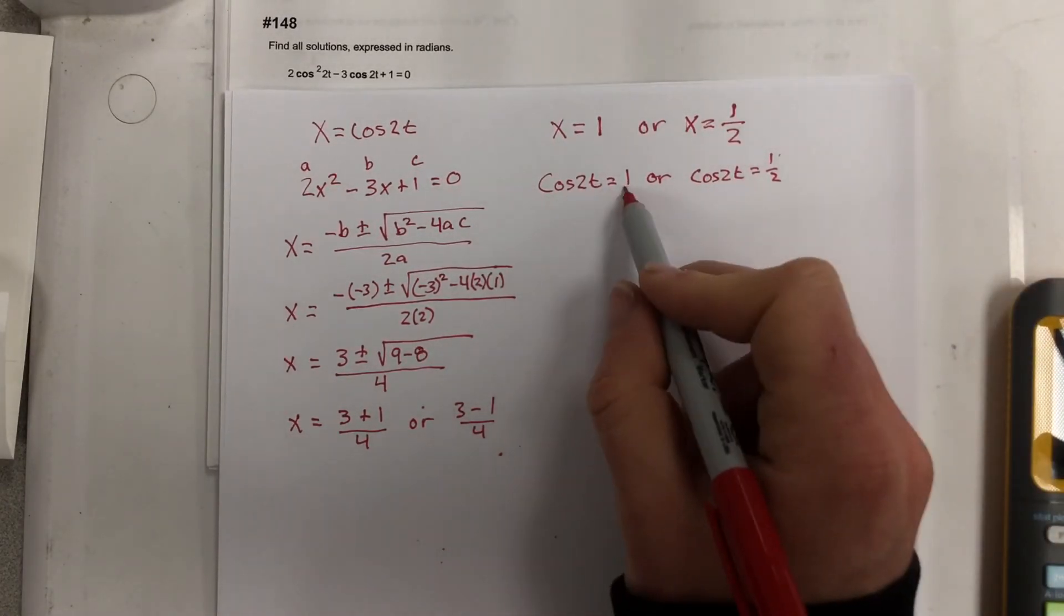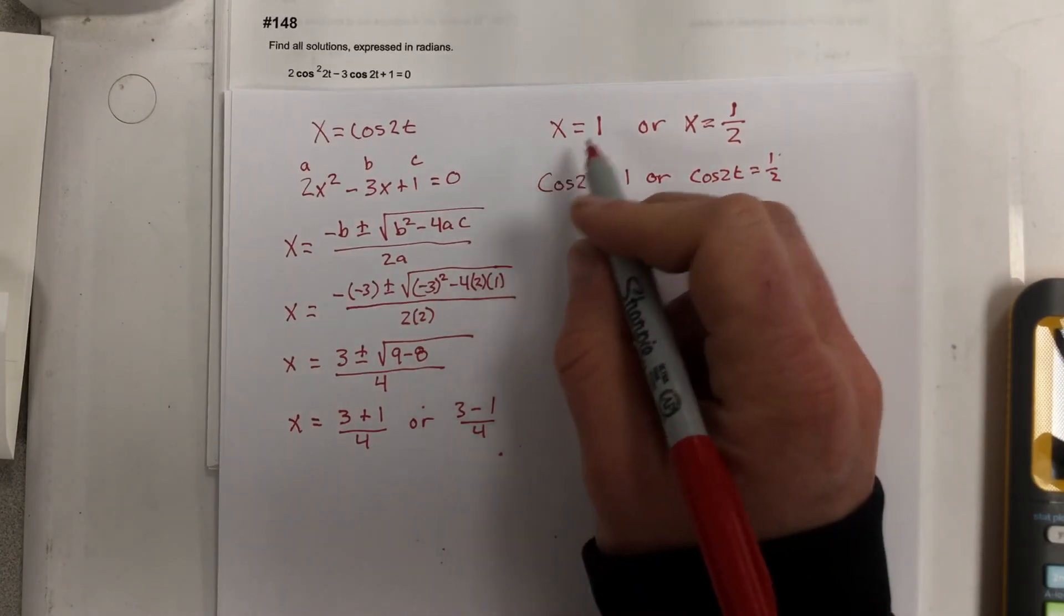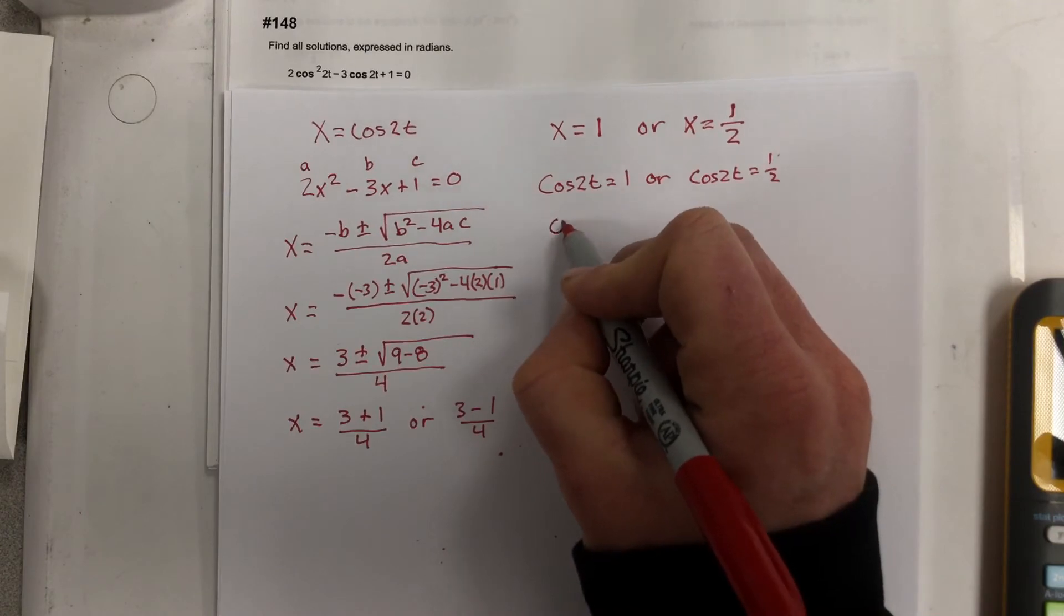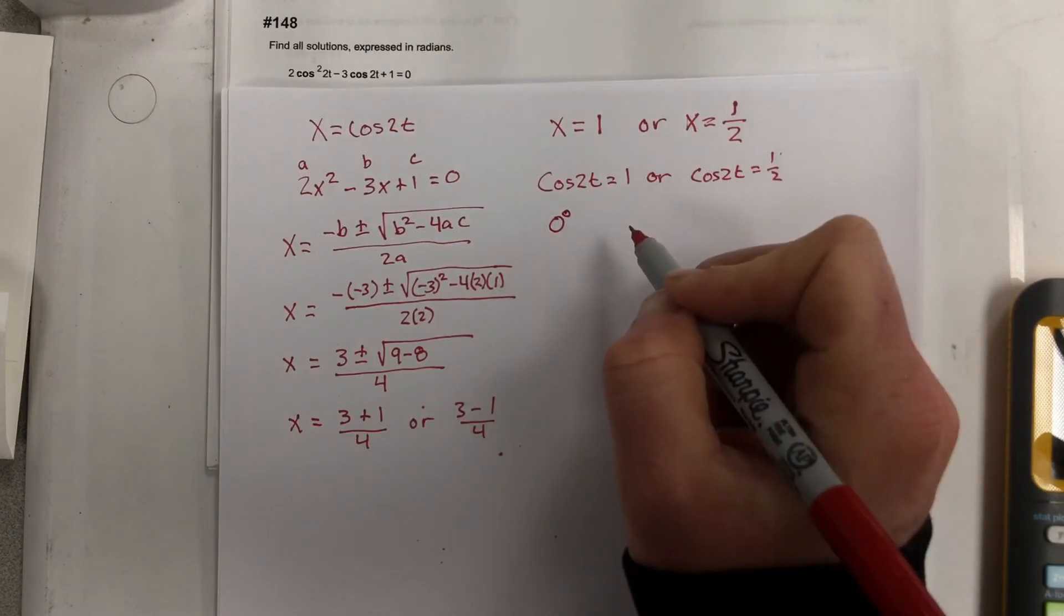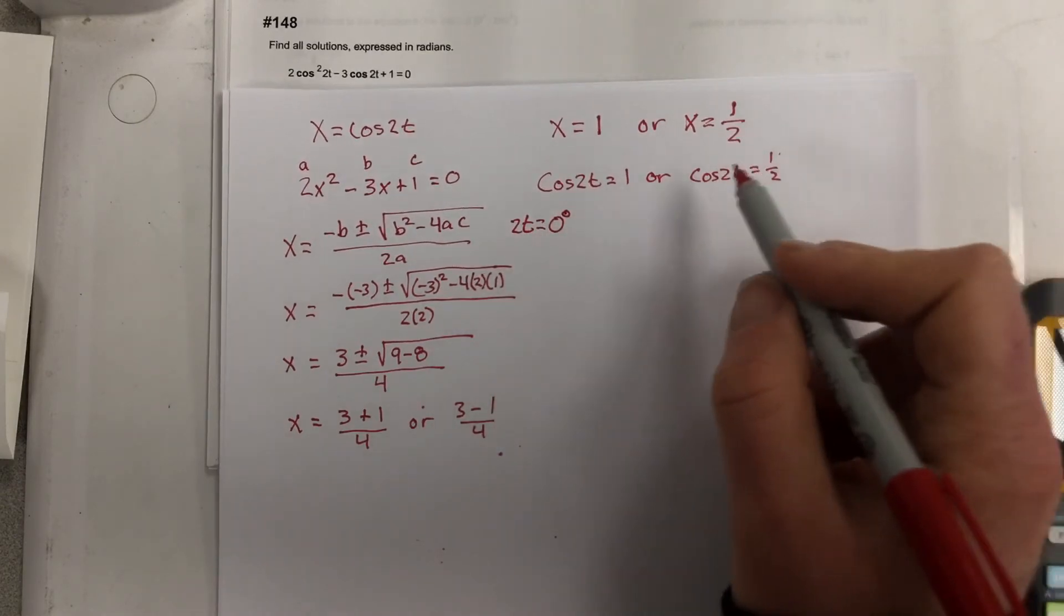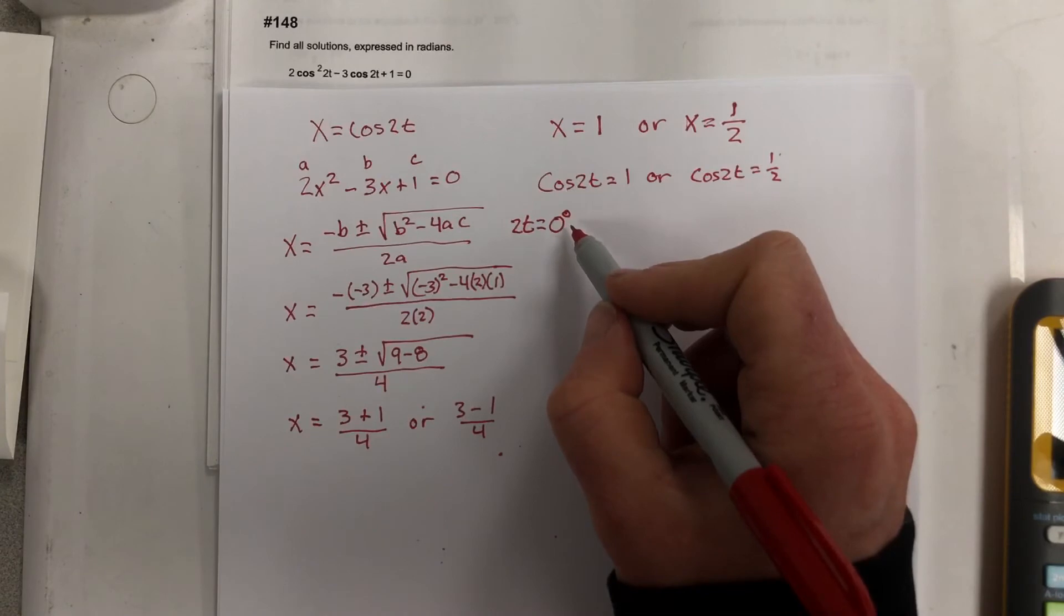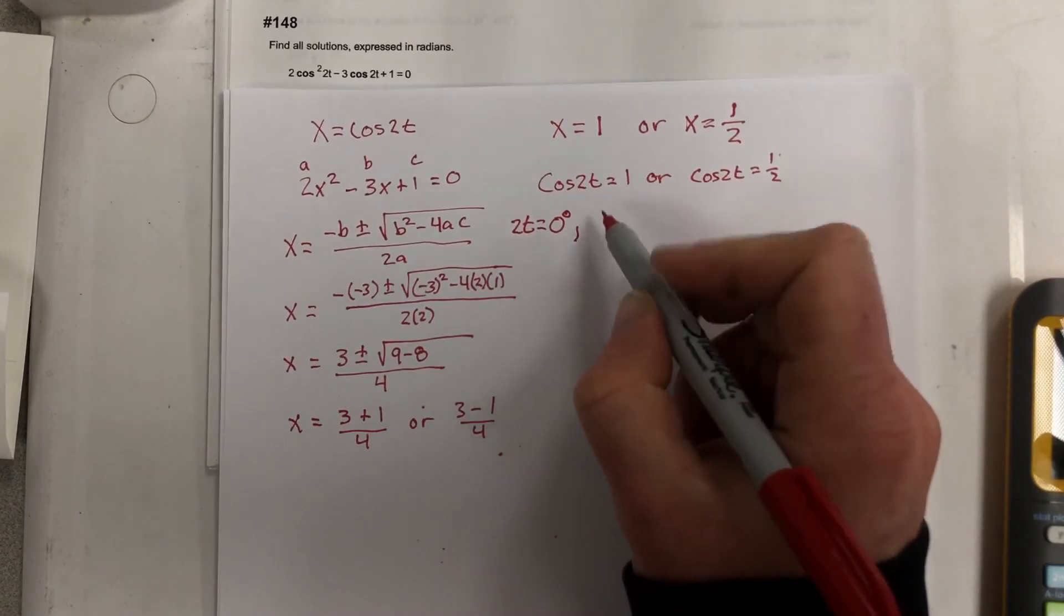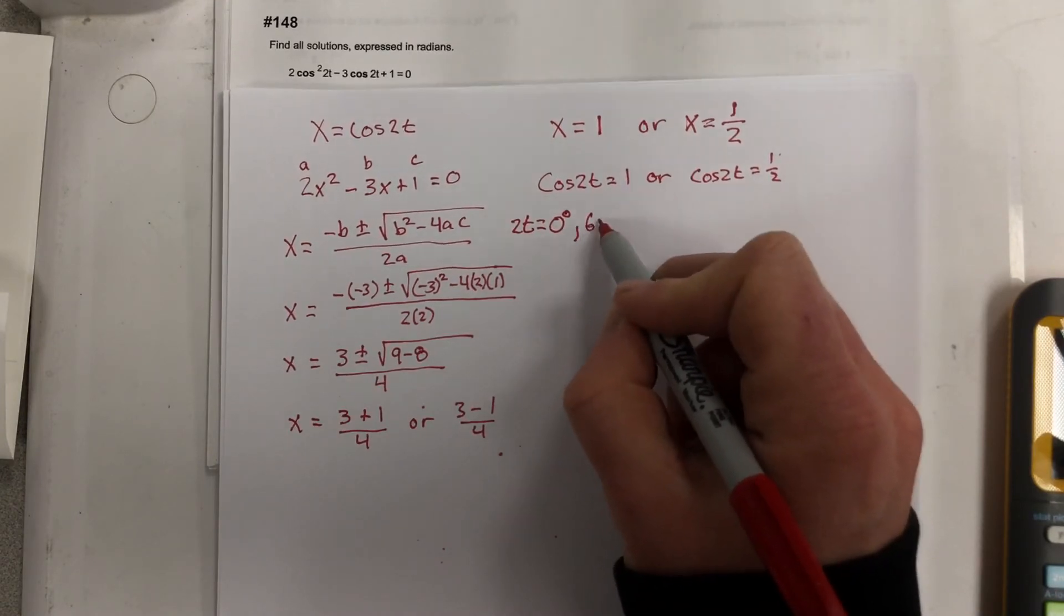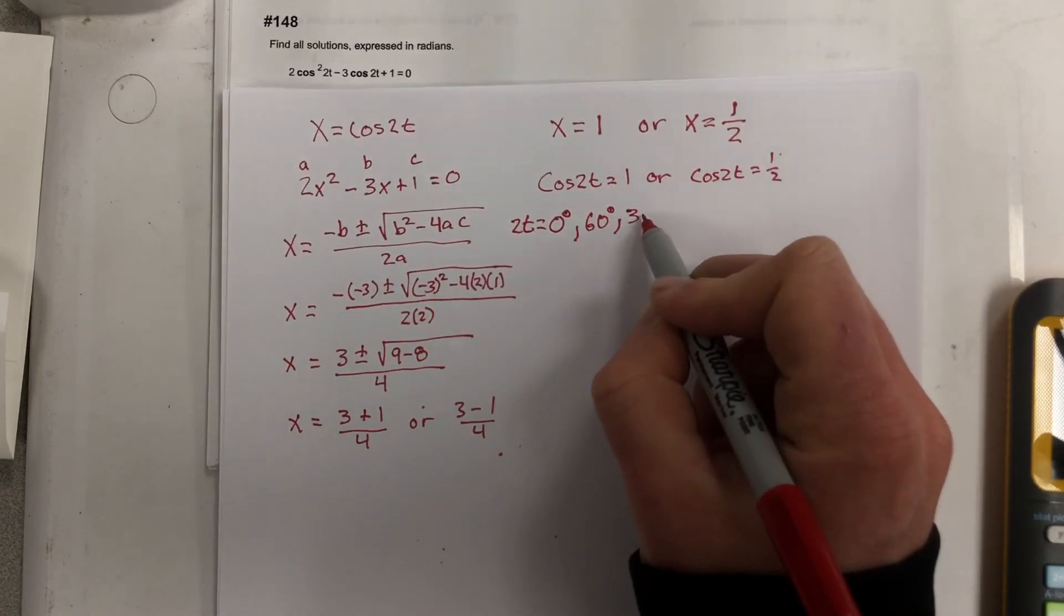When does cosine equal 1? Cosine equals 1 at 0 degrees. So I have 2t equals 0. And then when does cosine equal 1 half? Cosine equals 1 half at 60 degrees and 300 degrees.